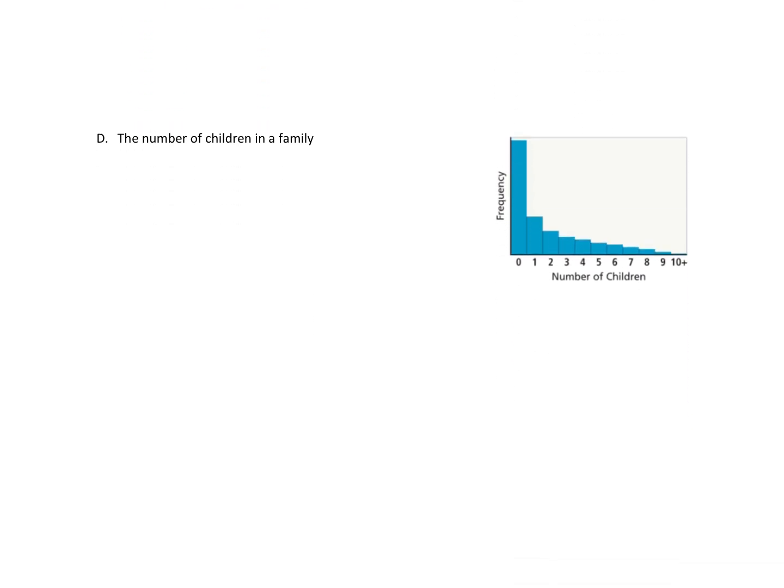All right, last one: the number of children in a family. So if we look at the histogram of the data, we can see the shape is skewed right. Like, oh yeah, really skewed right. That's not normally distributed. So it is not a normal distribution.